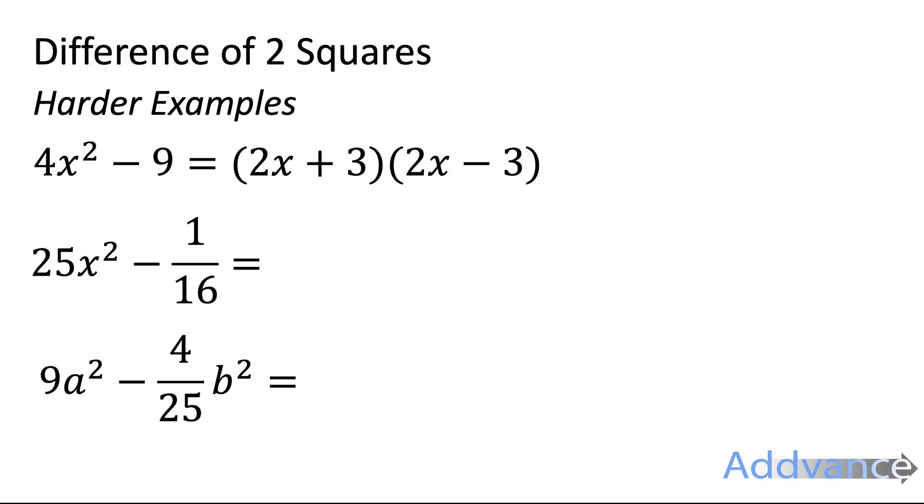Now some examples here. 25x squared minus 1 over 16. The square root of 25x squared is 5x because 5x times 5x is 25x squared. The square root of 1 over 16 is 1 quarter. Just square root the top and the bottom of the fraction. And we get this: (5x - 1/4)(5x + 1/4).